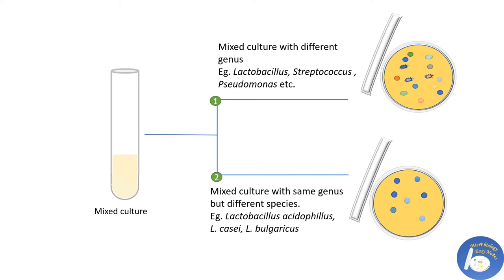The other possibility is that a mixed culture may contain the same genus but different species. For example, Lactobacillus casei, Lactobacillus acidophilus, and Lactobacillus bulgaricus may be present in the same sample. We can use this method to separate out a single species. There is also another possibility where this method can be used to separate out a single strain from a mix of the same species microorganisms.